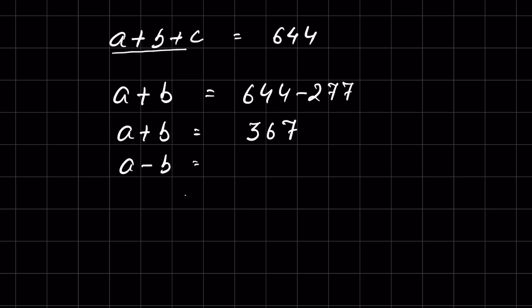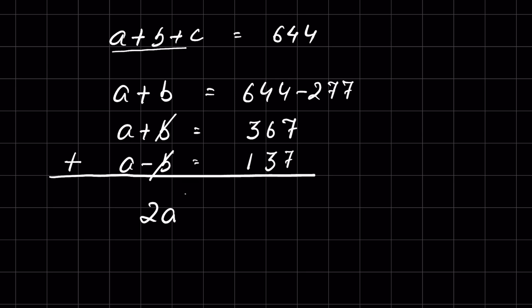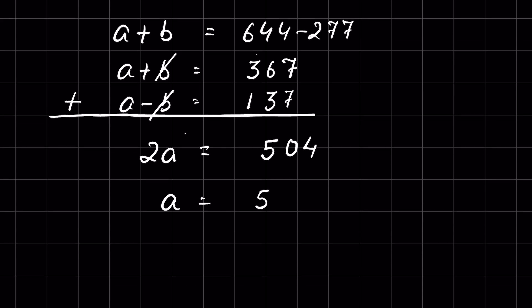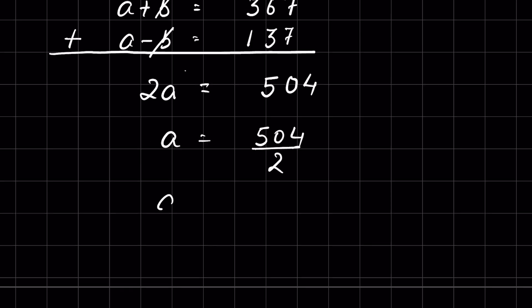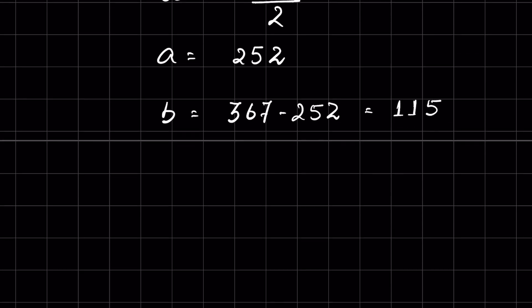Adding the two equations: a plus b equals 367 and a minus b equals 137. The b terms cancel, giving 2a equals 504, so a equals 252. Then b equals 367 minus 252, so b equals 115. Therefore a is 252 and b is 115.